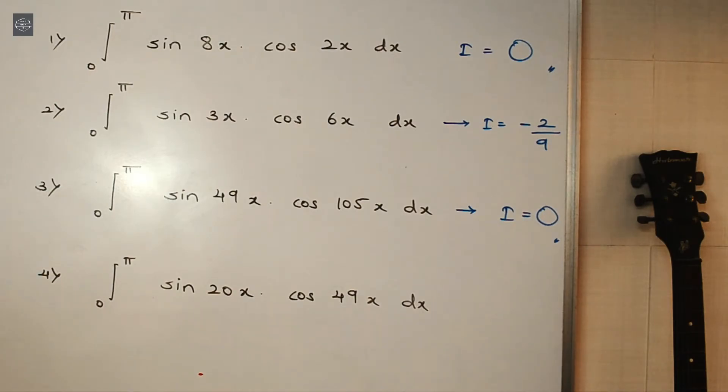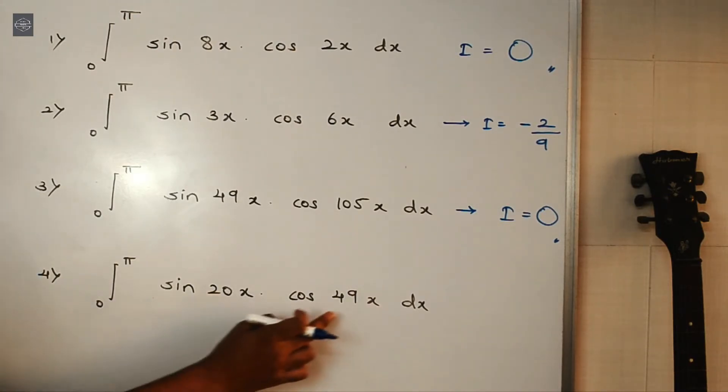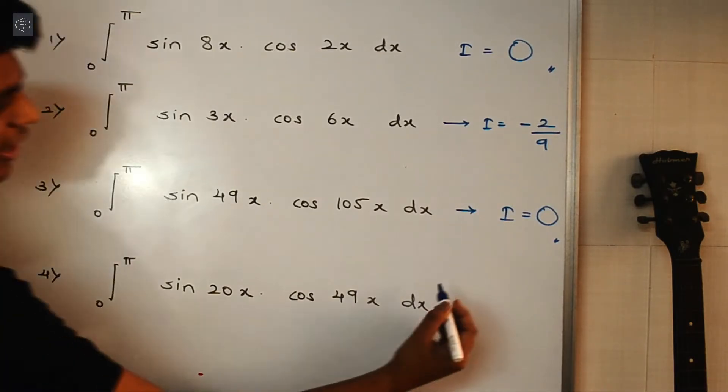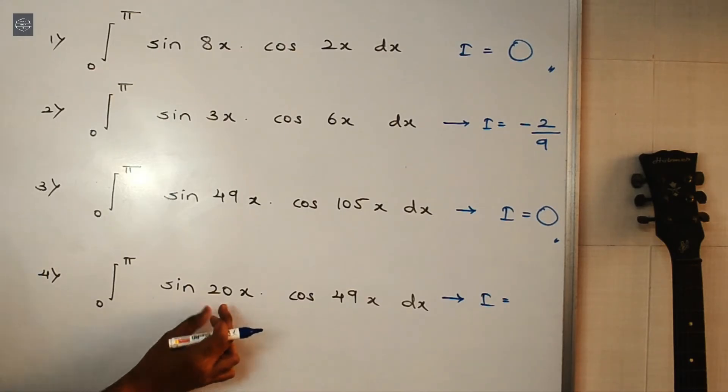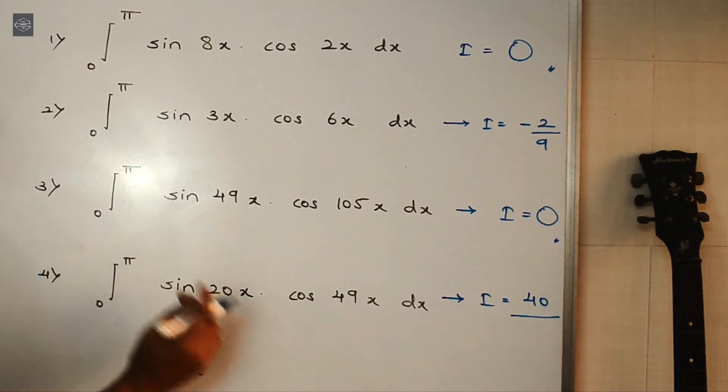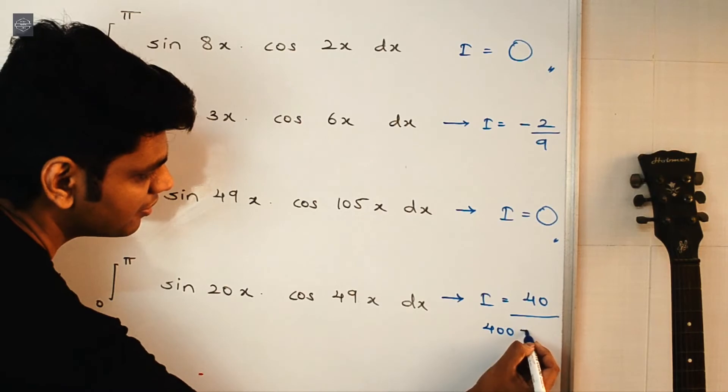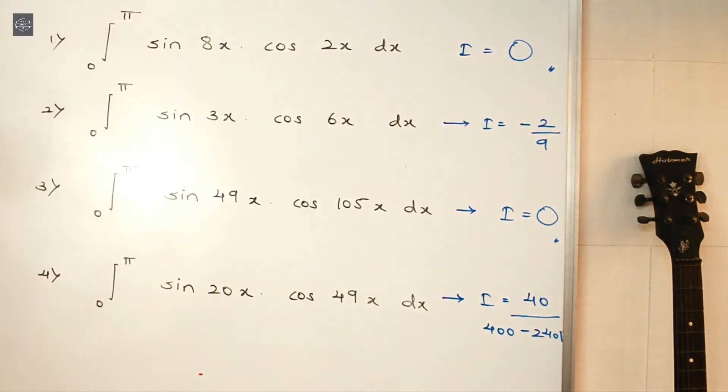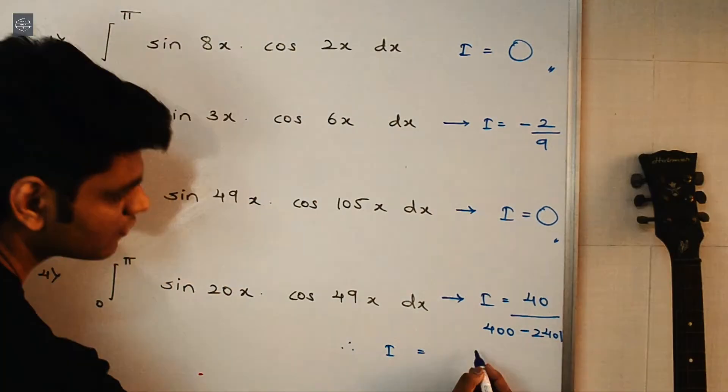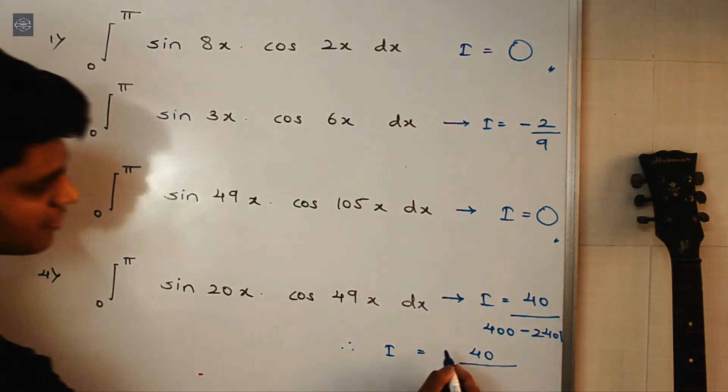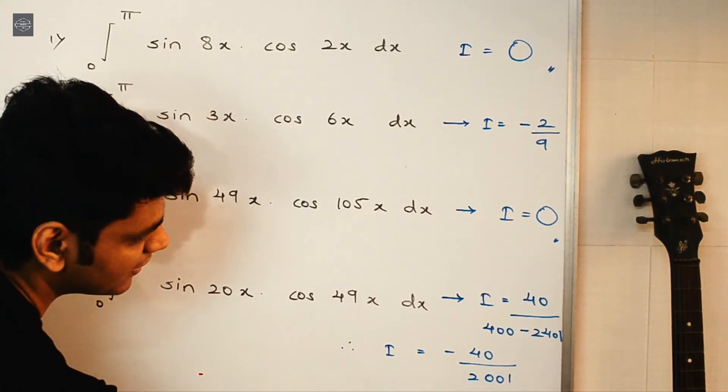And on the similar lines for the last one, here we have sin 20x into cos 49x. So here, 20-49, it is minus 29. 29 means it is an odd number. So here, i will be equal to 2 times a, 2 times 20, it is 40, upon a square minus b square. So 20 square is 400, minus 49 square is 2401. So you get 2401 it is. So therefore, i will be equal to 40 upon 400-2401. It is minus of 2001. And that's it.